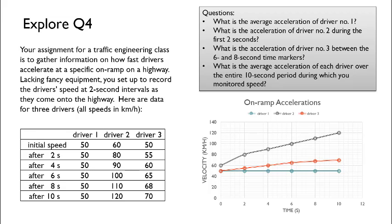What's the acceleration of driver number two during the first two seconds? The acceleration is a change in velocity from 60 to 80 kilometers per hour. That's a change of 20 kilometers per hour over a two-second interval. That makes our acceleration 20 divided by 2 kilometers per hour per second. In other words, 10 kilometers per hour per second.